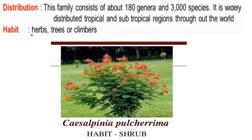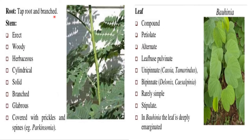Habit: herbs, trees, shrubs, or climbers. Root is taproot and branched. Stem is erect and woody, and in some plants it is herbaceous. The stem is cylindrical, solid, branched, and glabrous — that means there are no hairs. Covered with prickles and spines.